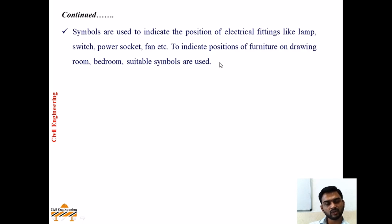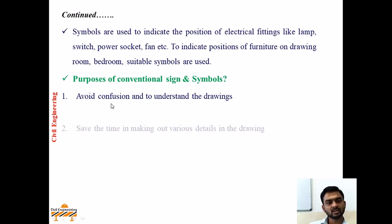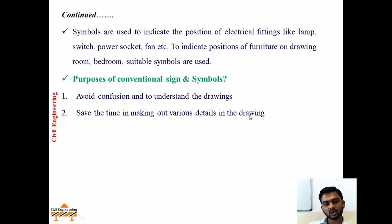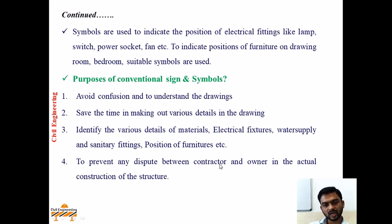With signs and symbols of different materials, elements, or structural components, we can depict in short what actually exists. The purpose of conventional signs and symbols is to avoid confusion and to understand drawings easily - heavy text inside the plan can be reduced by using them. They also save time in making out various details, help identify materials, electrical fixtures, water supply and sanitary fittings, and position of furniture, and prevent any dispute between the contractor and owner during actual construction.